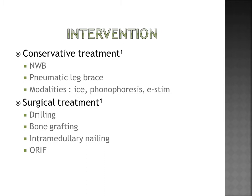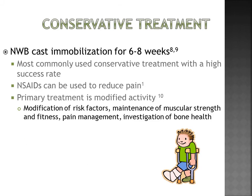For intervention, conservative treatment includes non-weight bearing, the use of pneumatic leg braces, and modalities. For surgical treatment you have drilling, bone grafting, intramedullary nailing, and ORIFs. Most sources suggest using non-weight bearing cast immobilization for six to eight weeks — the most commonly used conservative treatment with a high success rate. NSAIDs can be used initially to reduce pain, and modified activity alongside cast immobilization is the primary treatment to address risk factors.